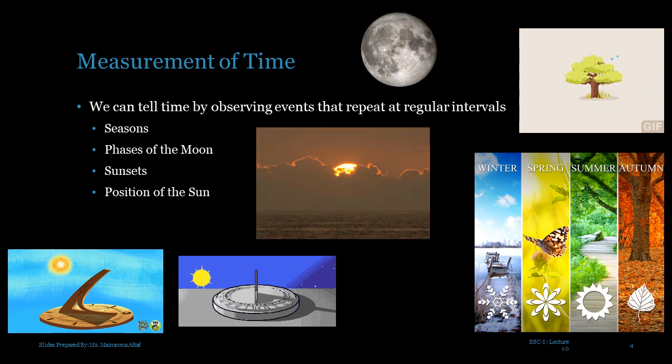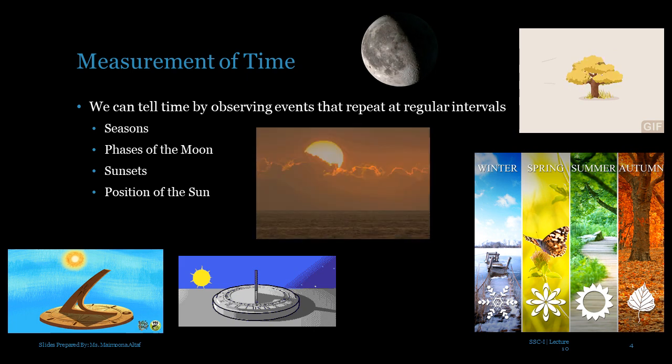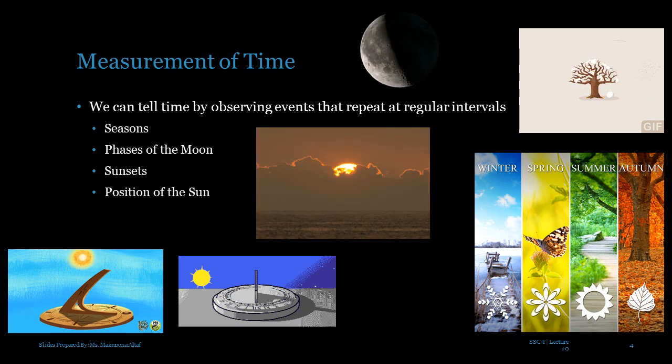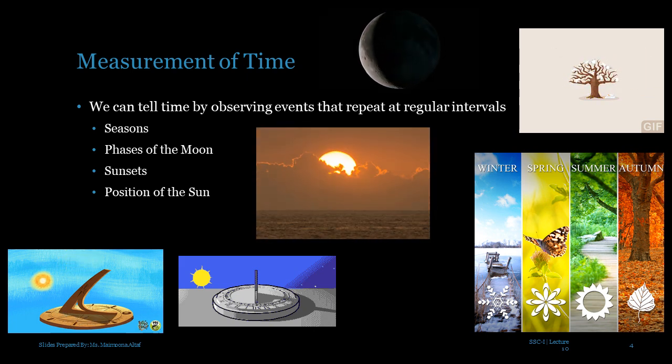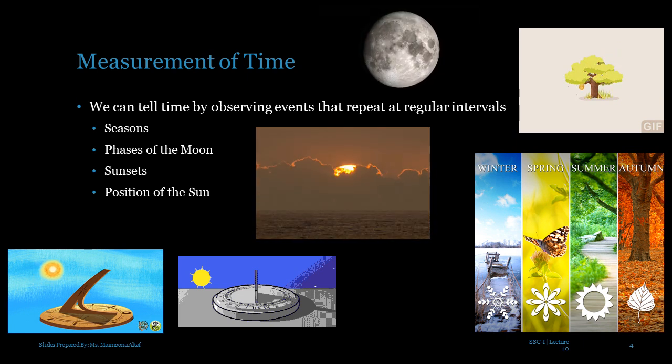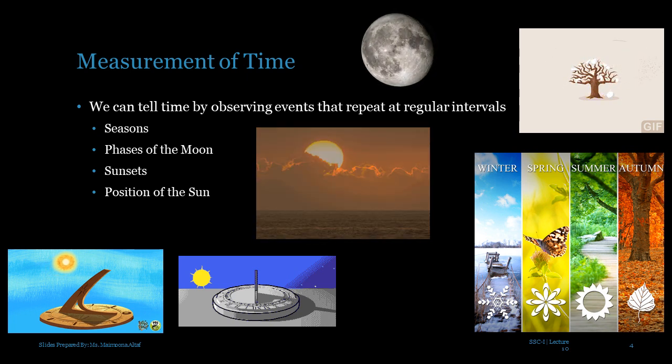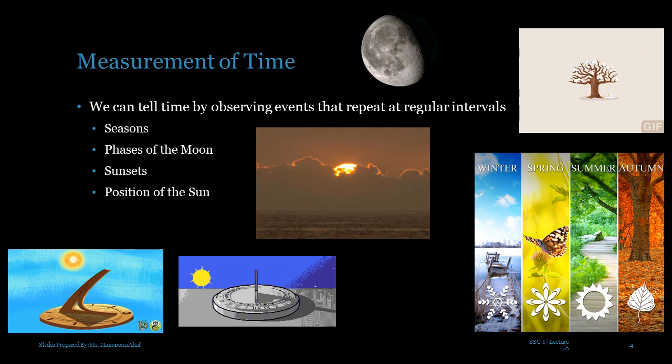So these are some natural phenomena occurring in nature with the help of which we can observe events and tell about the time.